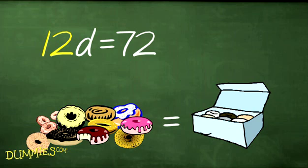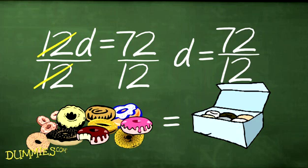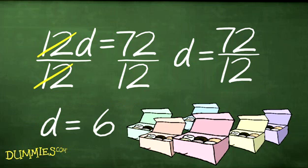So, once again, determine the multiplier of the variable and divide both sides by it. In this case, 12. Then reduce both sides of the equal sign. So, d equals 6 dozen donuts.